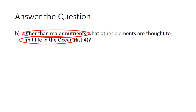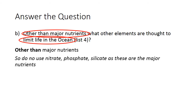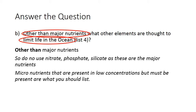The second part of the question was universally answered quite poorly, and I think it was somewhat misread. I'm specifically asking: other than the major nutrients, what other elements are thought to limit life in the ocean? The key here is 'other than major nutrients.' If you wrote down nitrate, phosphate, or silicate, these are major nutrients — they are not part of the answer. They may well limit life in the oceans, but that is not what the question is asking.